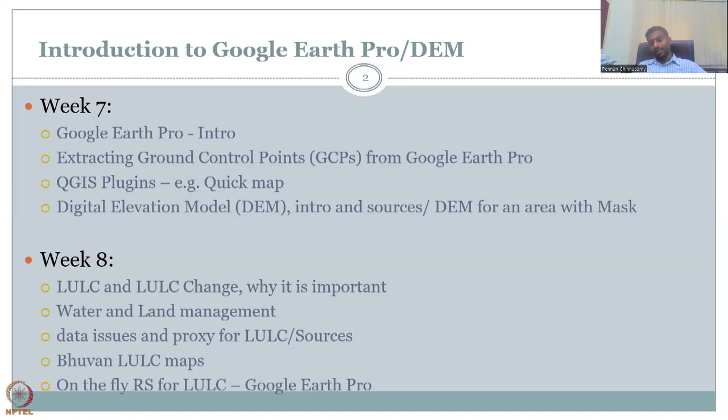These data sources get upgraded really fast. For example, when I was doing my PhD, I used to download this data, mark it, and then classify it into different land use and land cover categories. Whereas now, at the click of a button, you get it done. In those times, making one map was a master's thesis — one year of hard work — but now it takes two seconds. Thanks to technology, science and development, it is very easily available.